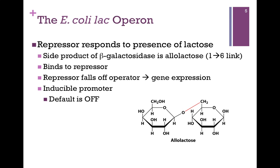So the question is: how do we turn the operon on? The repressor responds to the presence of lactose. One of the side products of beta-galactosidase is allolactose, pictured at the bottom of the screen. A portion of the time, beta-galactosidase will hydrolyze the bond between galactose and glucose, but then reform the link between two different carbons — between carbon-1 and carbon-6 — producing allolactose. Allolactose binds to the repressor and changes its affinity for the operator region, so the repressor falls off the operator and RNA polymerase can bind and express the structural genes. We refer to this as an inducible promoter: the default condition is off, but we can induce expression by the presence of the inducer allolactose.